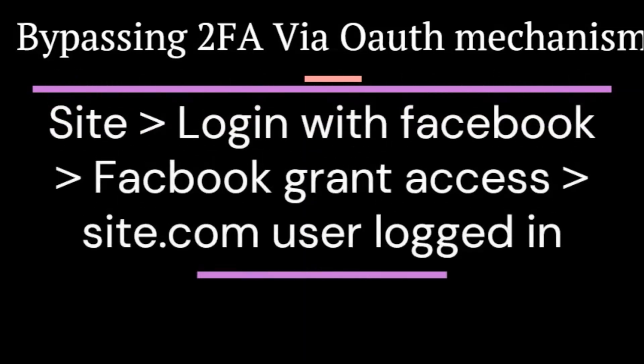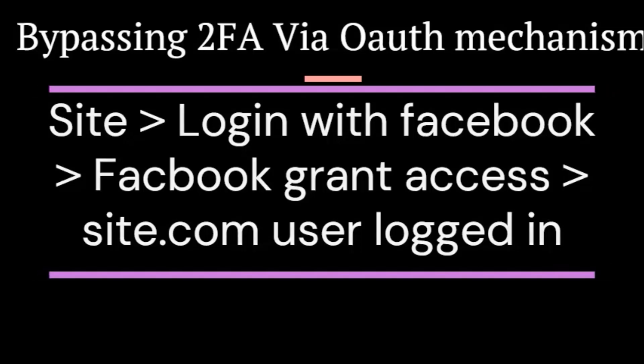Bypassing 2FA via OAuth Mechanism. An OAuth integration is a third-party login mechanism that allows a user to login using a third-party account such as Facebook or Google. For example, if Site.com has the option to login with Facebook and Facebook grants the login, the user will successfully be logged into the application without a 2FA code.